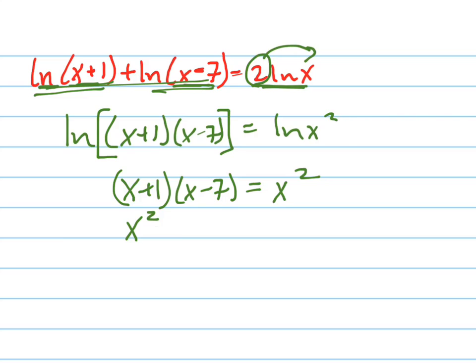And now I'm going to foil this out. Plus x minus 7x minus 7 equals x squared. Now I'm going to add like terms: negative 6x minus 7 equals x squared.